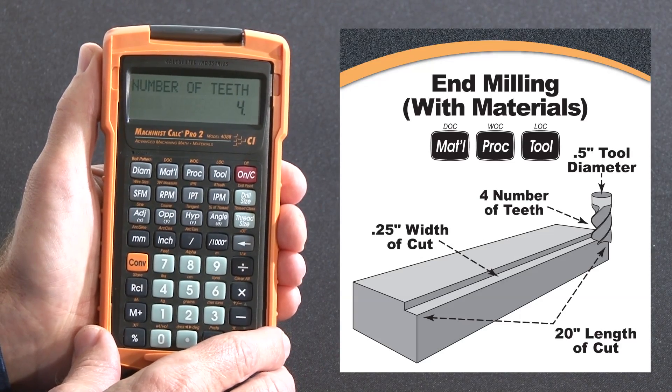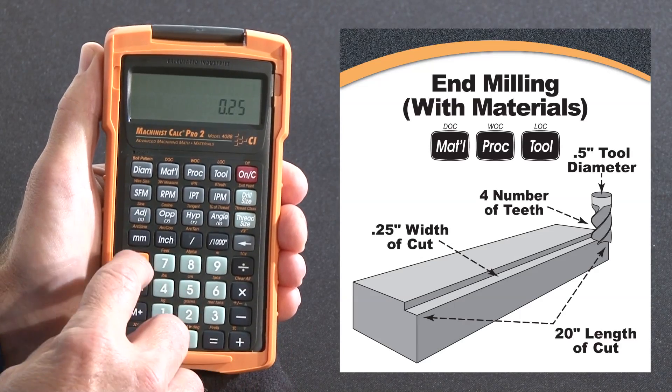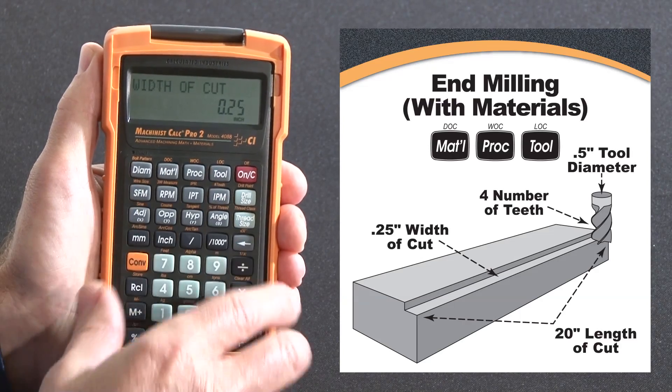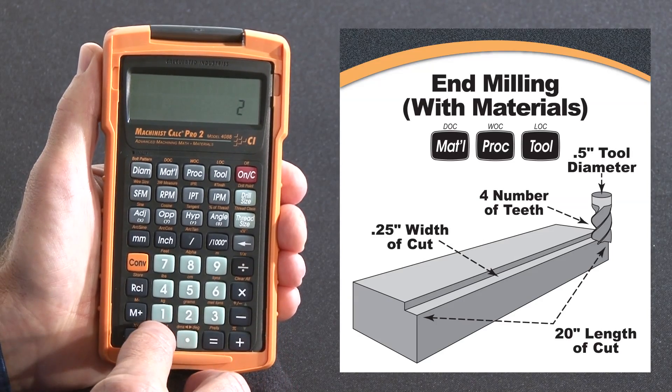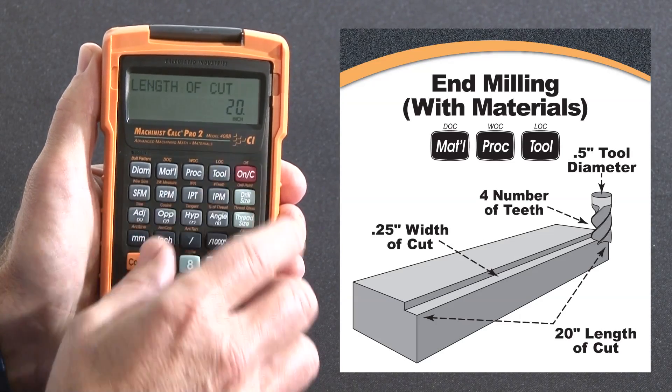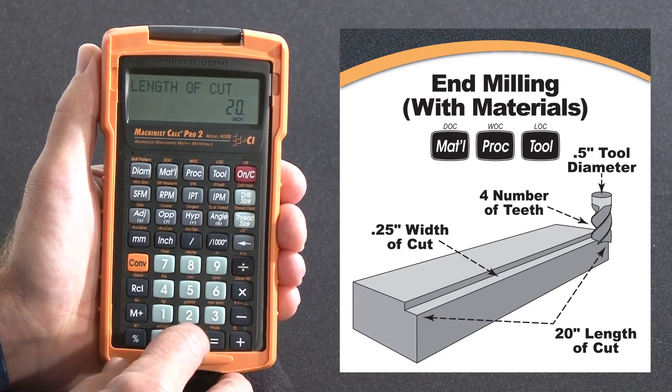I'm going to put in the width of cut, which is 0.25, that's over the process key there. And the length of cut is a 20 inch length of cut. And the tool diameter is a half inch.